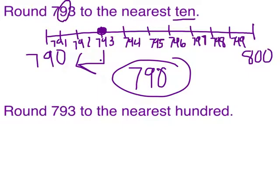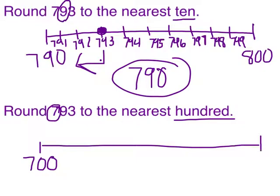The next example asks me to round 793 to the nearest hundred. Here, I'm going to be looking at the digit in the hundreds place. There are seven hundreds. So this number falls between 700 and 800 on the number line. I'm going to fill in my number line.